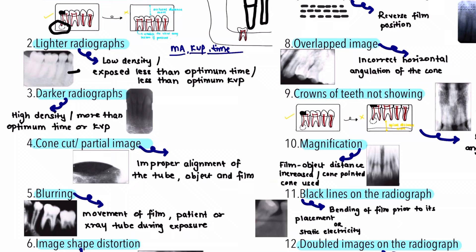The third error is darker radiographs, which appear more blackish in color due to high density. This is the complete opposite of lighter radiographs — darker radiographs result from over-exposure, meaning the radiograph is exposed at higher mA, kVp, or time. The correction is to use appropriate mA, kVp, and time. Another reason can be if the source-to-film distance is too short, whereas in lighter radiographs, the source-to-film distance is longer.